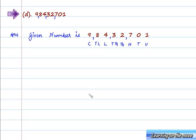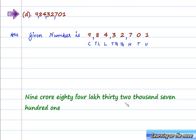We can very easily read this as 9 crore, 84,32,701. So this is our number: 9 crore, 84,32,701.